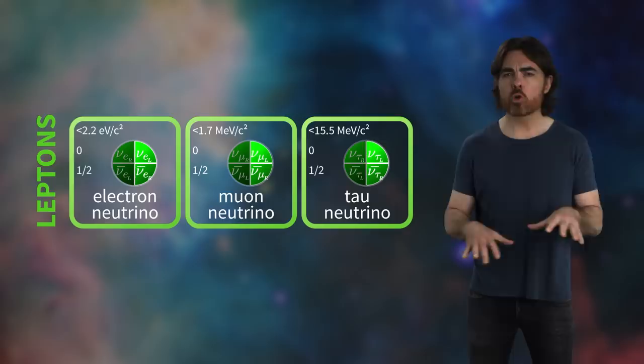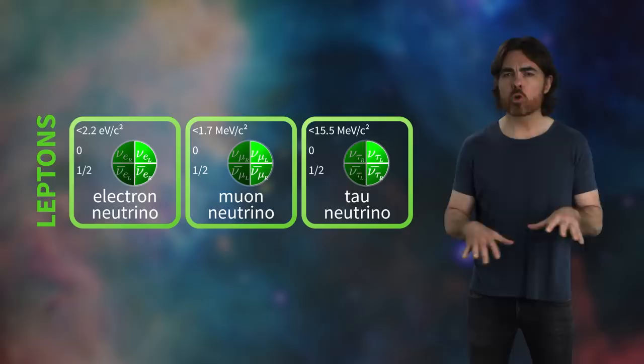That means we've only ever seen left-handed neutrinos or right-handed antineutrinos. The opposite chirality, right-handed neutrinos or left-handed antineutrinos, should only interact gravitationally so it would be near impossible to detect.